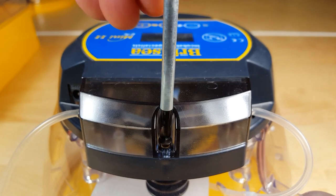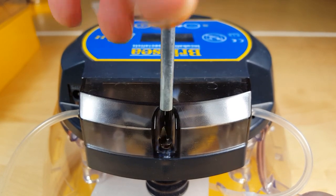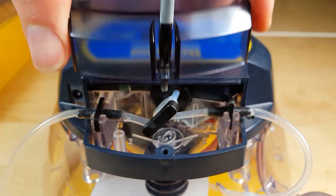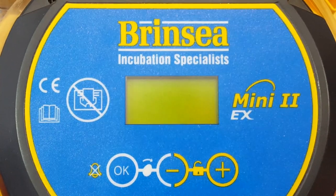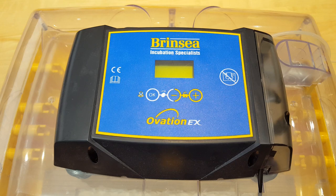This short clip aims to show you how to set up the humidity pump and how to replace the pump tubing on the Brintsey Mini, Maxi and Ovation EX machines.